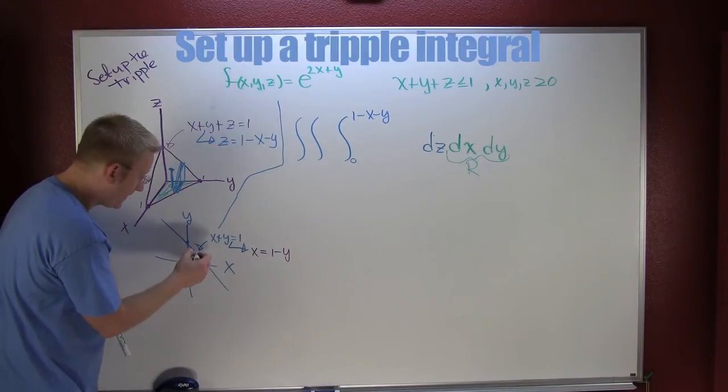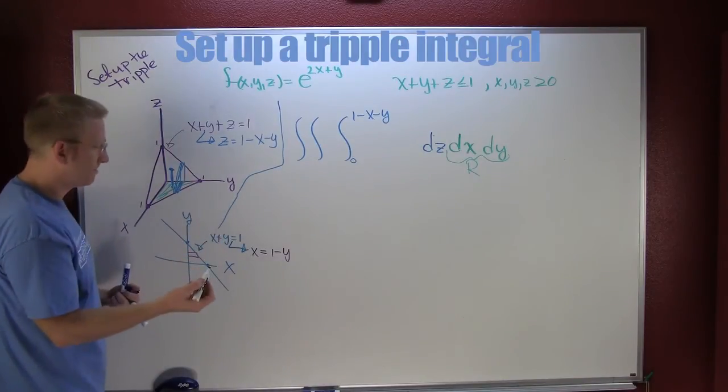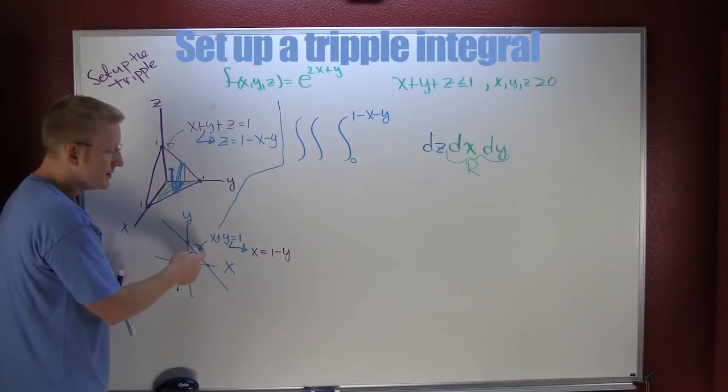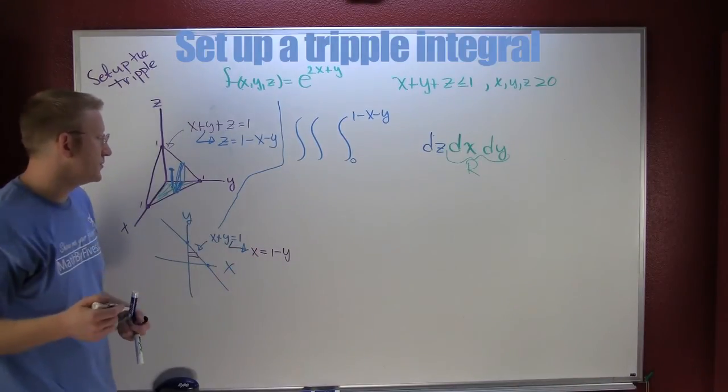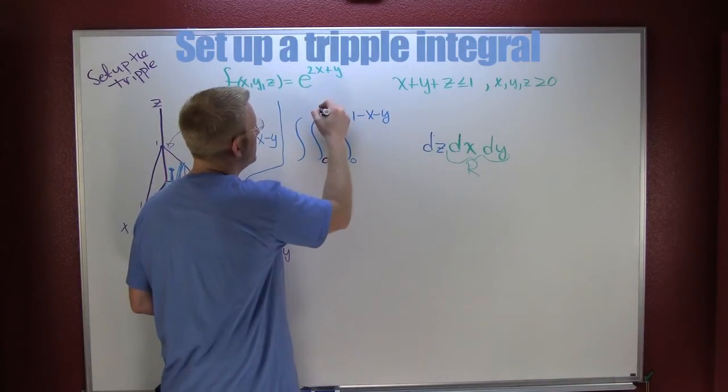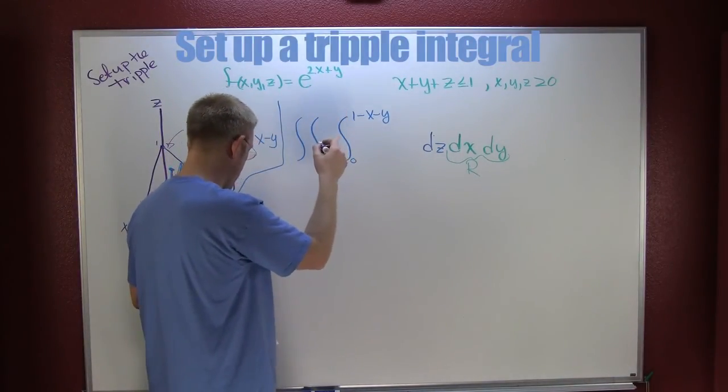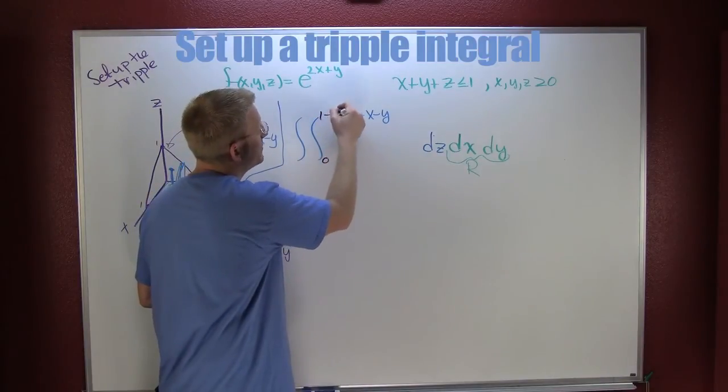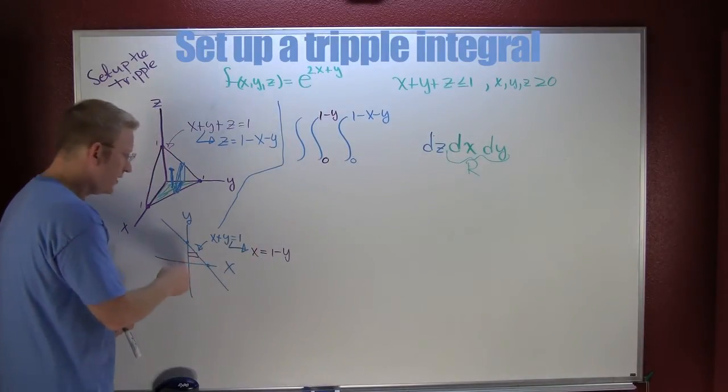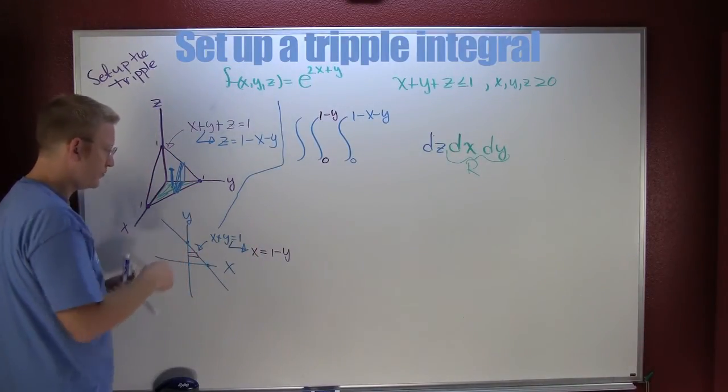And then if I was to draw my rectangle here as I have it drawn there, great, my lower limit is 0, my upper limit is X equals 1 minus Y. So that's 0 and 1 minus Y.